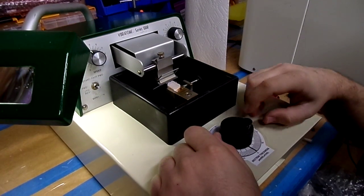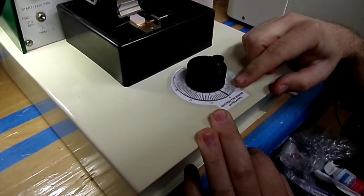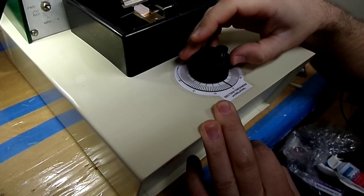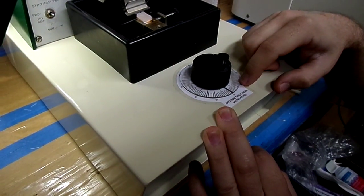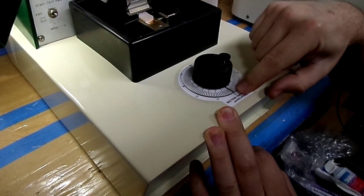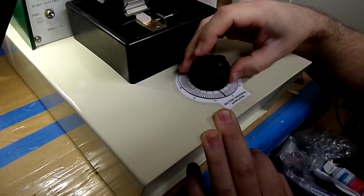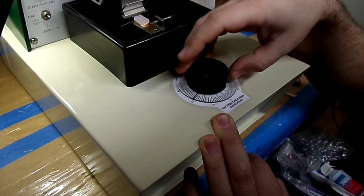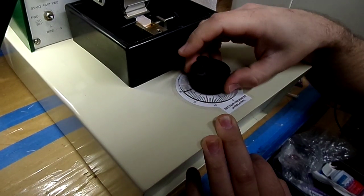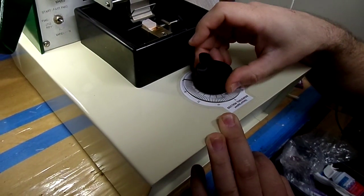So the way that we adjust the specimen thickness is with the dial here. It's relative, so if you've cut at zero, if you go to 10, it's going to do 10, 20 is 20. But if you start at 20, then 30 will do 10, and 40 will do 20. So it's relative to wherever you did your last cut.